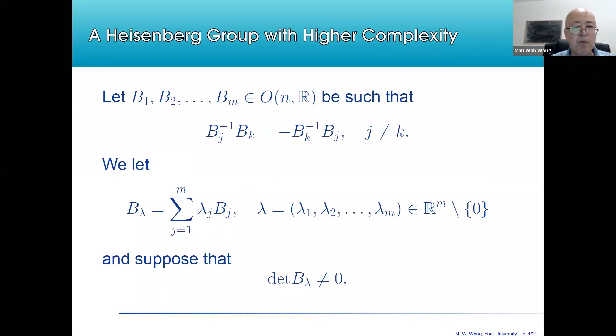I begin with M orthogonal matrices of order N with real entries, B1, B2, up to Bm, such that Bj inverse times Bk is the negative of Bk inverse times Bj whenever j is not k. We denote by B lambda a linear combination of the matrices Bj, and we suppose that this matrix B lambda is invertible.